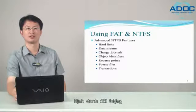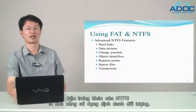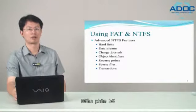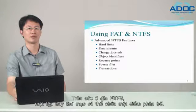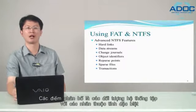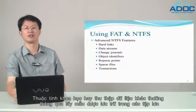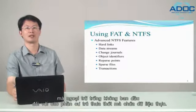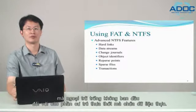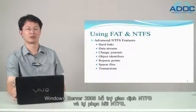Object identifiers — another feature of NTFS is the ability to use object identifiers. Reparse points — on NTFS volumes, a file or folder can contain a reparse point. Reparse points are file system objects with special attribute tags that are used to extend functionality in the I/O subsystem. Sparse files — scientific or other sampled data is stored in large files that are primarily empty except for sparsely populated sections containing actual data. Windows Server 2008 also supports Transactional NTFS and Self-Healing NTFS.